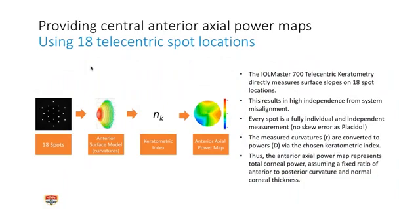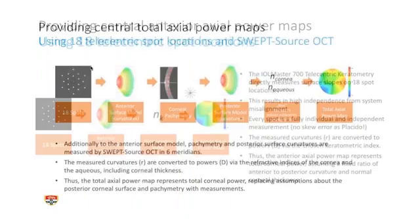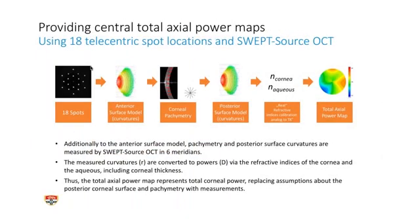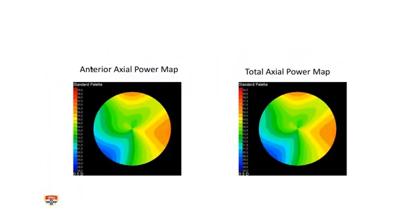How do they do it? They're using the 18 telecentric spot locations which they currently use, interpreting the data and producing two maps: an anterior axial power map, and because they can use pachymetry and posterior surface curvature measurements with swept source, they can give a total axial power map. So you have these two images — anterior axial and total axial power map. It's a bit like total keratometry.